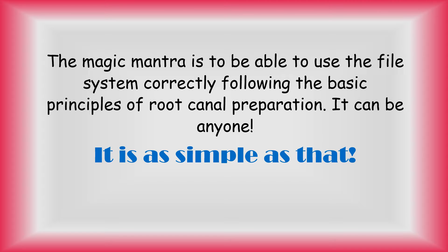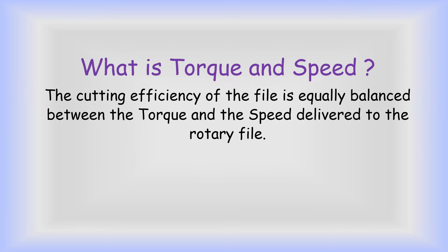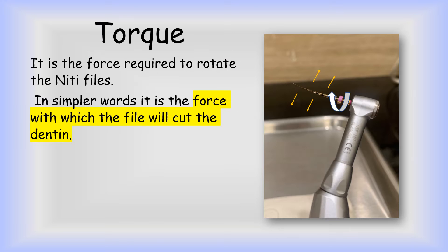I'll be choosing one file system and explain how to use it. The two features which always confuse a beginner are torque and speed. The cutting efficiency of a file is equally balanced between the torque and the speed delivered to the rotary file. Torque is the force required to rotate the NiTi files — in simpler words, it is the force with which the file will cut the dentine.